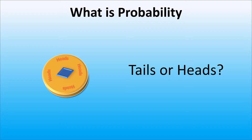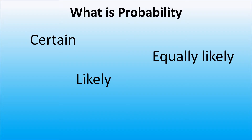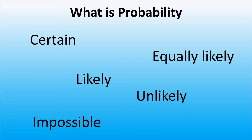We can talk about the probability of an event happening as being certain, likely, equally likely, unlikely, or impossible. So let's look at what each of them mean.